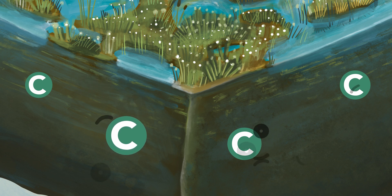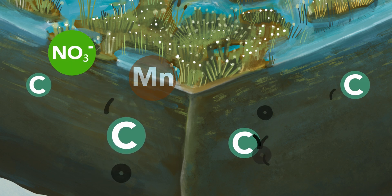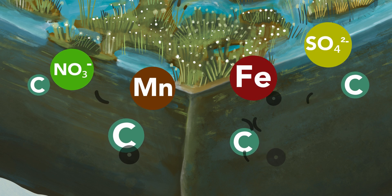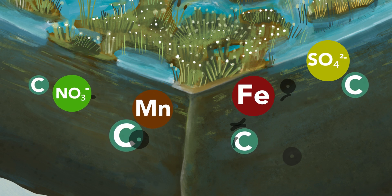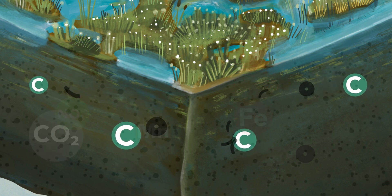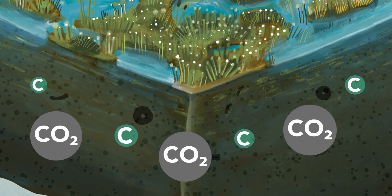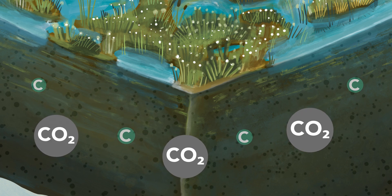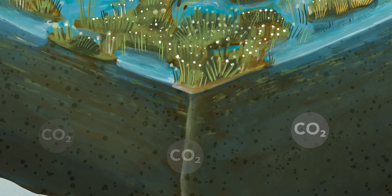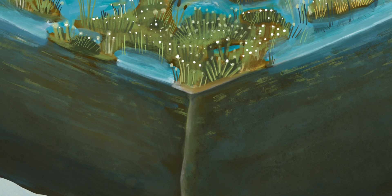Instead of oxygen, other microbes then use nitrate, manganese, iron and sulphate to digest the organic material. When these get depleted, microbes that can use carbon dioxide or the organic matter itself as a substitute for oxygen take over. This final step in microbial decomposition produces methane.